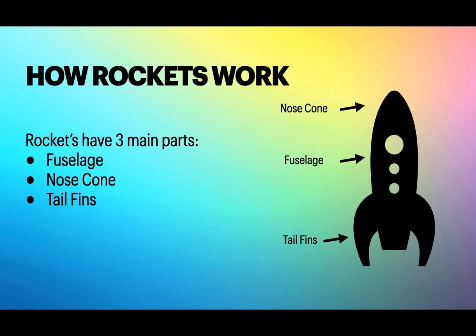Rockets have three main components: the fuselage, nose cone, and tail fins. The fuselage is where the fuel is stored and the chemical reactions take place. The nose cone helps make the rocket more aerodynamic and move through the sky smoothly. The tail fins also aid in this.